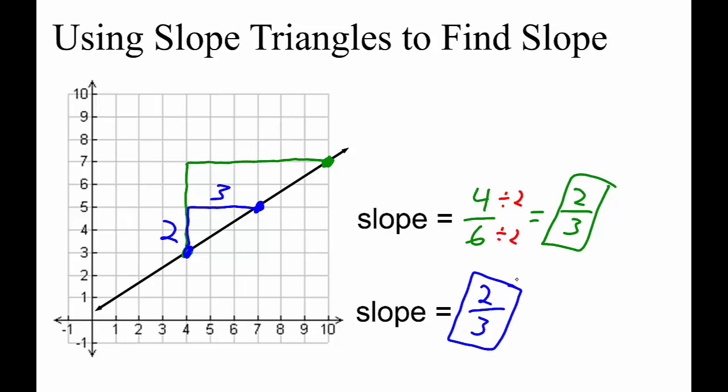Using this smaller slope triangle, we still get the same slope, 2 thirds. In fact, the slope between any two points on a line will always be the same, because lines have a constant rate of change.